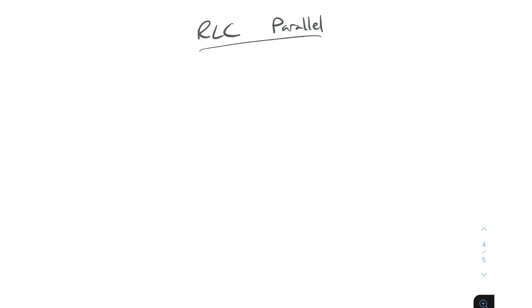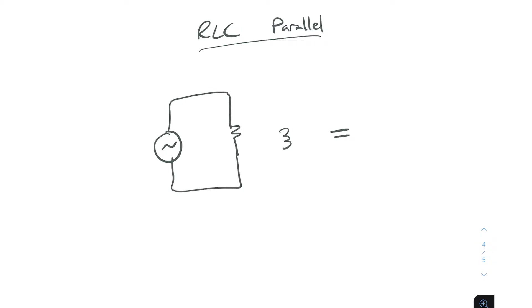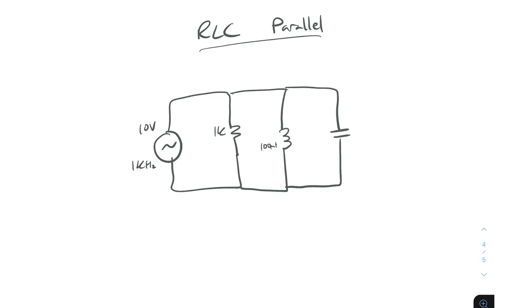In this video we're going to do an RLC example problem for a parallel circuit. An RLC circuit consists of a resistor, an inductor, and a capacitor. We have a voltage source, resistor, inductor, and capacitor joined in parallel: 10 volts at 1 kHz, a 1 kilohm resistor, a 100 millihenry inductor, and a 0.1 microfarad capacitor.